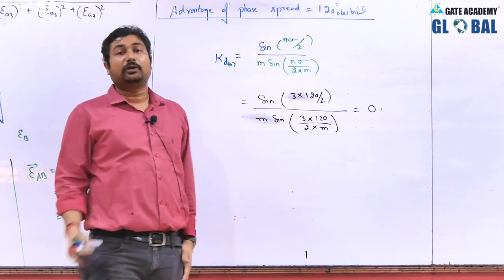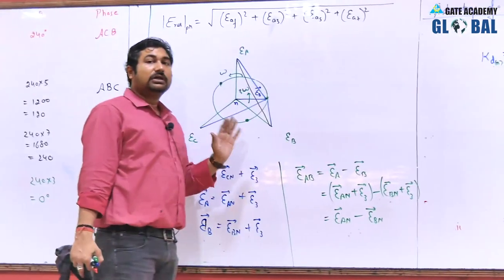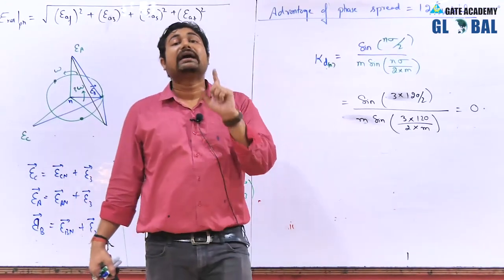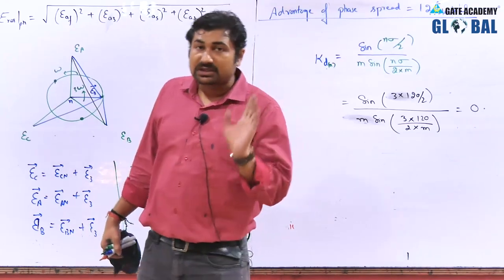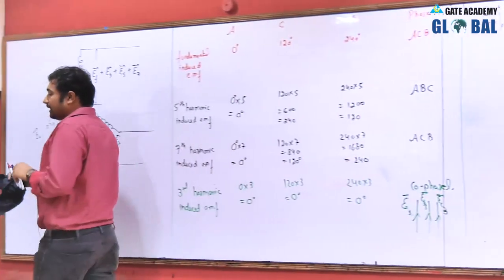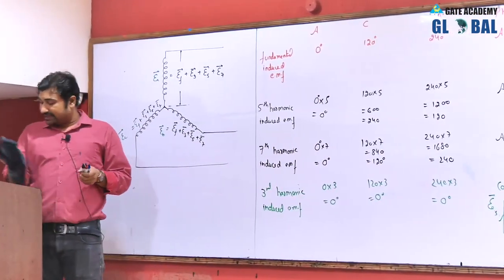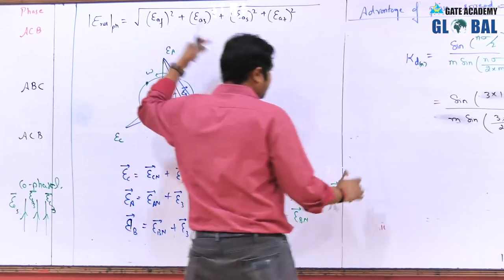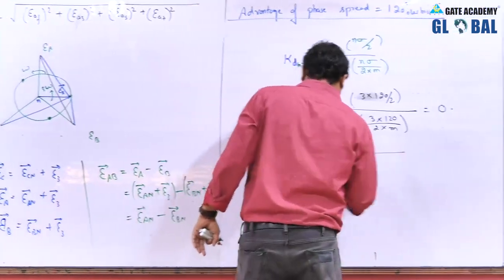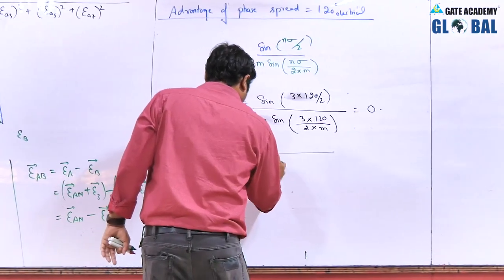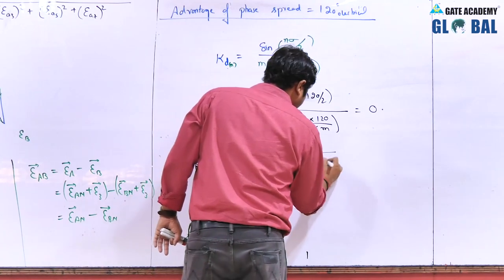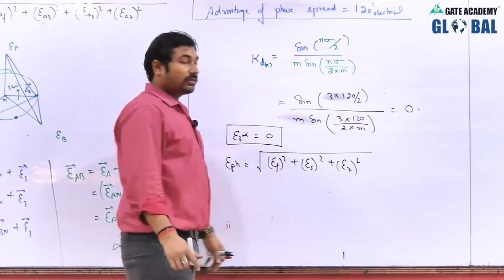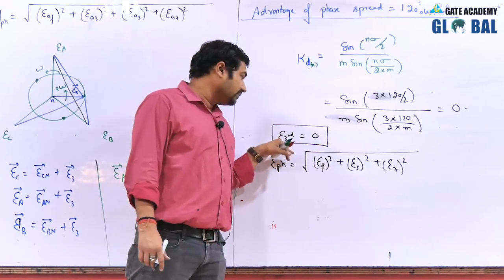The triplen harmonic voltages are automatically 0 and the problem of oscillating neutral is resolved. Generally we prefer to design a 3-phase machine with a phase spread of 120 degrees electrical. But remember that a phase spread of 120 degrees electrical is only possible in the case of double layer winding. Once we have this phase spread, all triplen harmonics become 0. In this case the phase voltage contains the fundamental, 5th harmonic, and 7th harmonic, but the third harmonic becomes 0 as the third harmonic winding factor makes it 0.